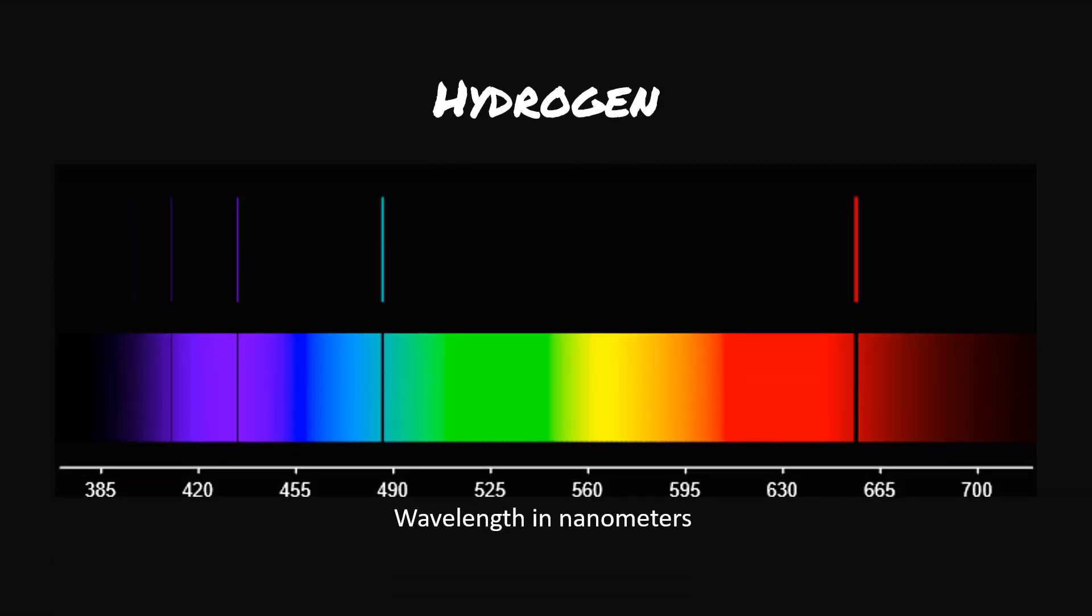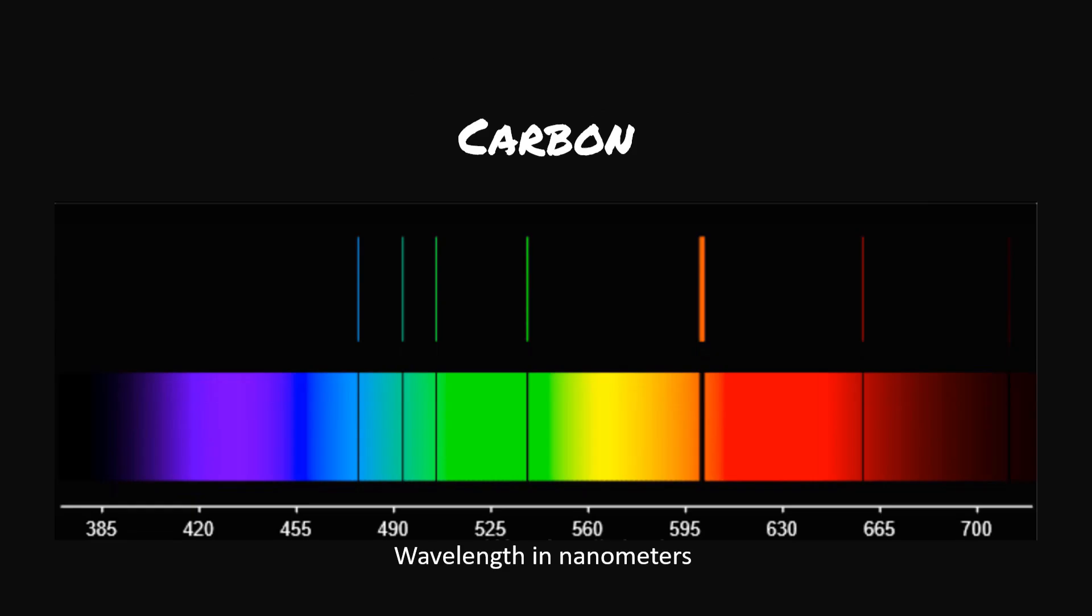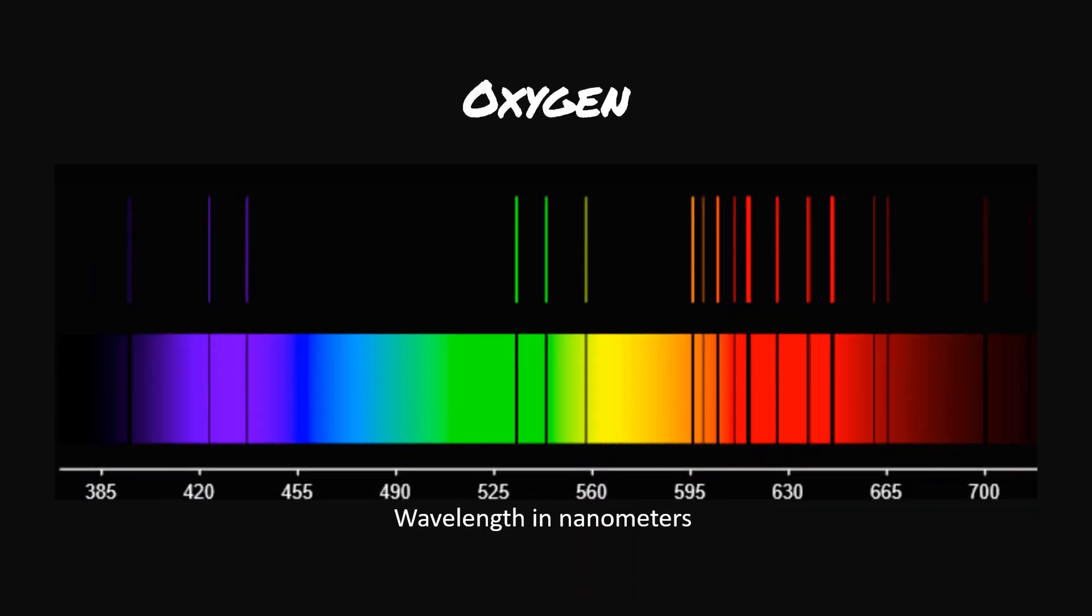The colours absorbed and re-emitted are a fingerprint of the gas. Every atom has a characteristic pattern of lines.